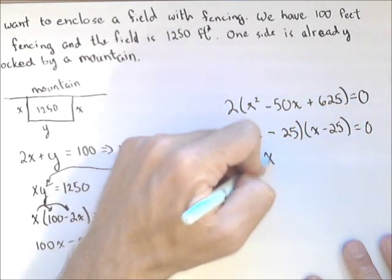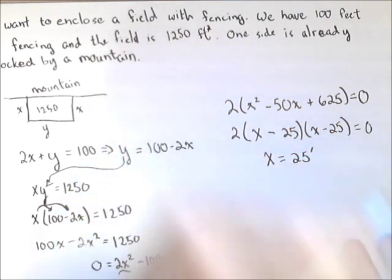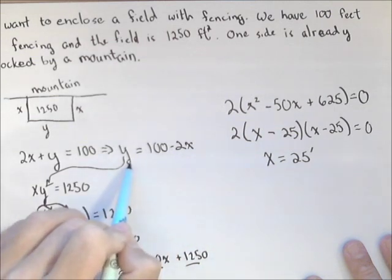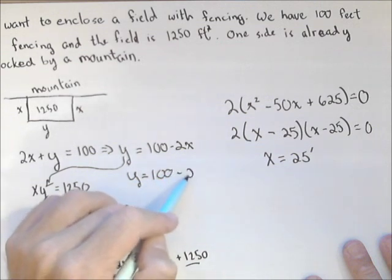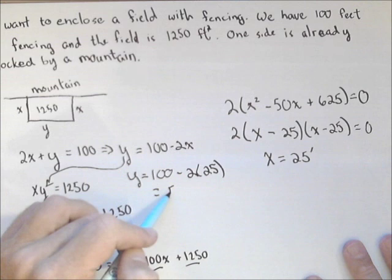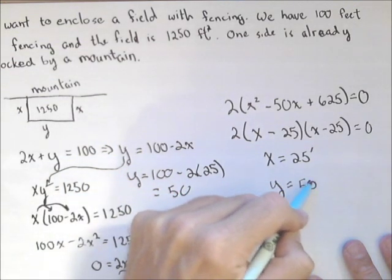So, we get that the dimension of side x has to be 25 feet. To find y, well, remember we already solved y in terms of x here. So, y equals 100 minus 2 times the 25 feet. Or 50. Well, y equals our 50 feet.